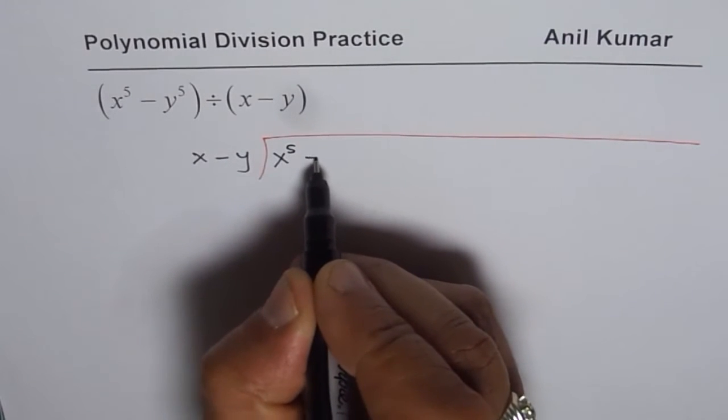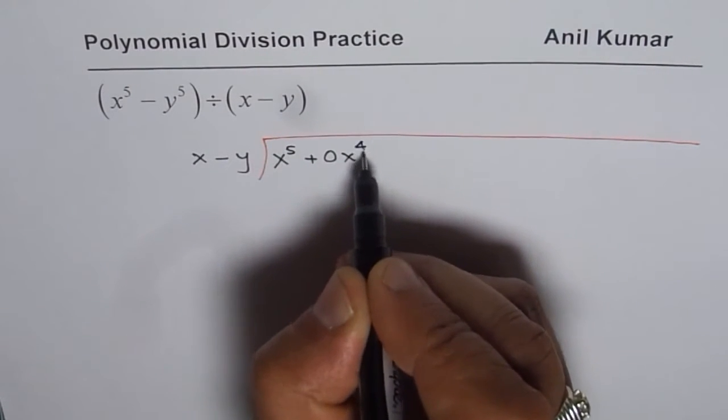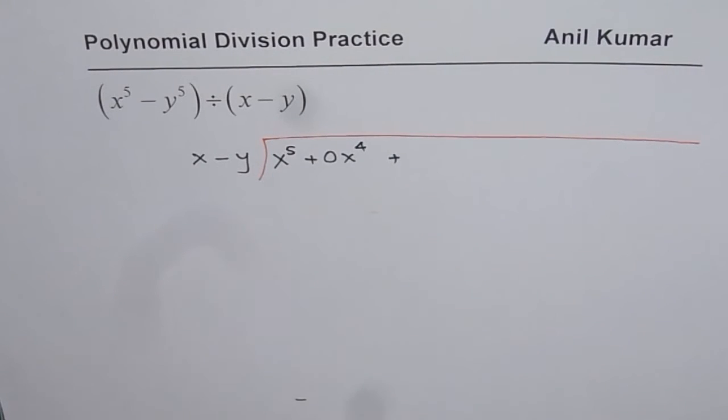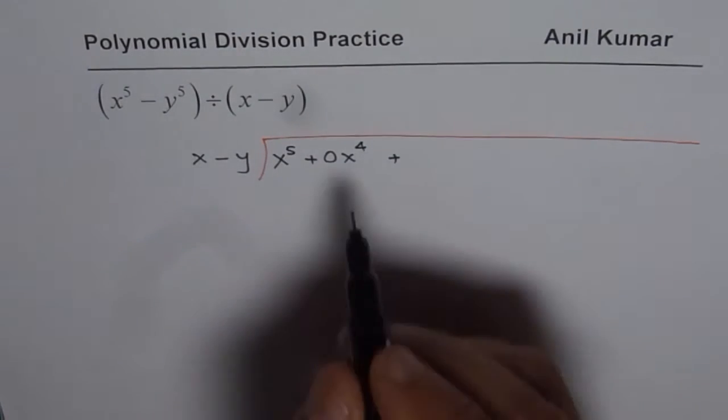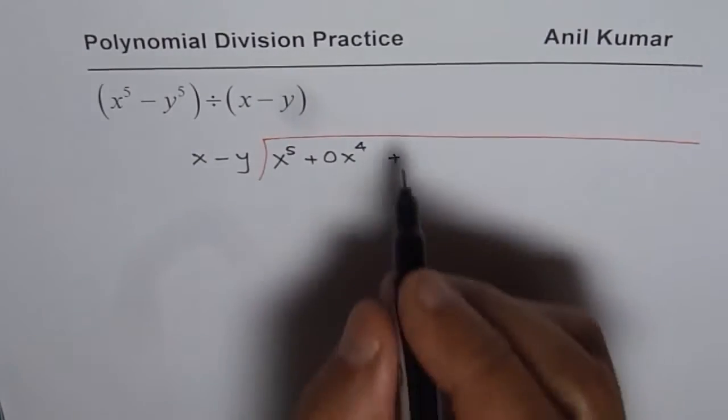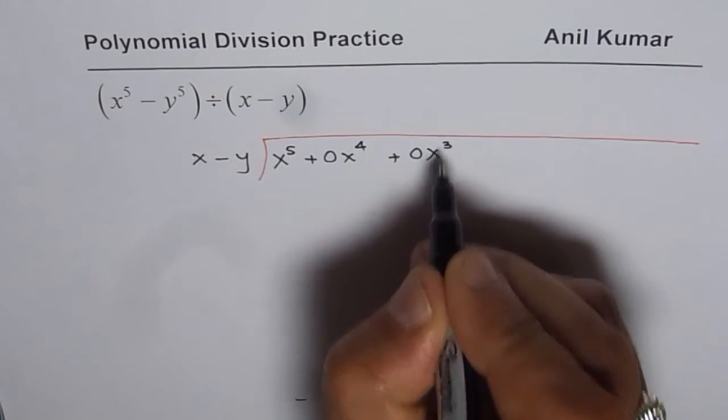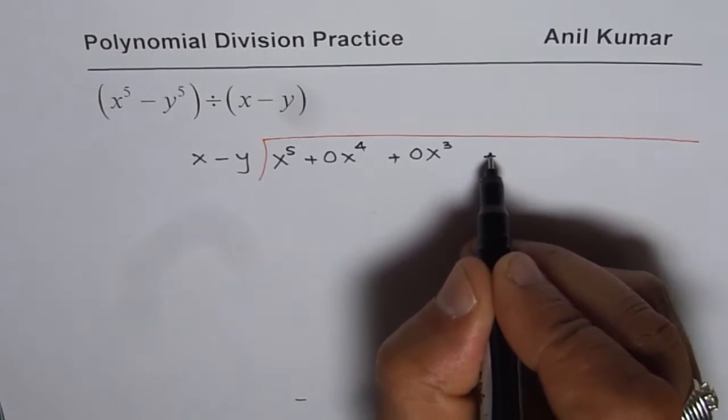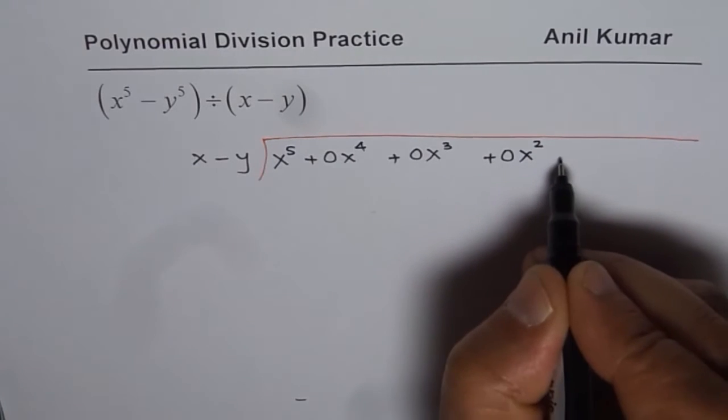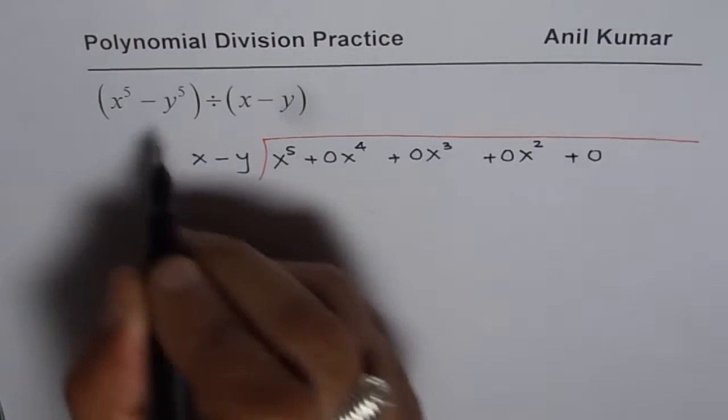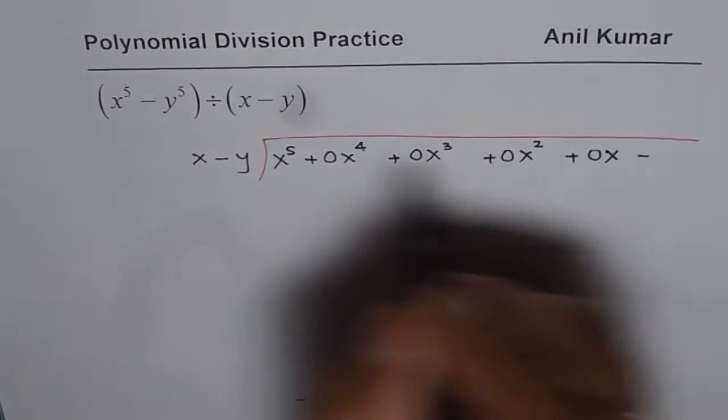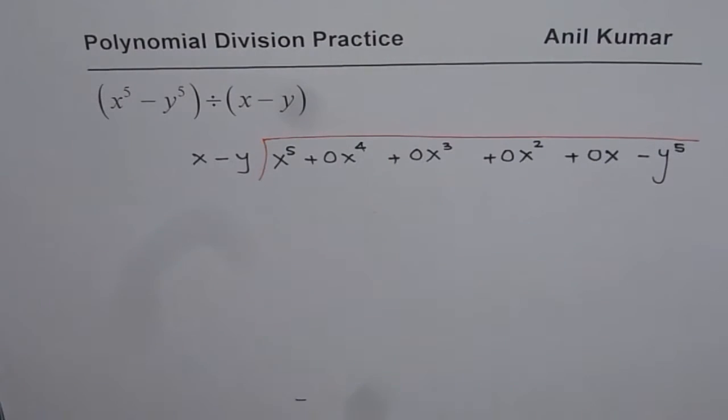We'll have x to the power of 5 plus 0x to the power of 4. I'm purposely leaving some space here, and we'll see why. We'll continue with 0x cube, plus 0x square, plus 0x, and then minus y to the power of 5. In general, this is perfectly fine - decreasing powers of x are my placeholders for the time being.